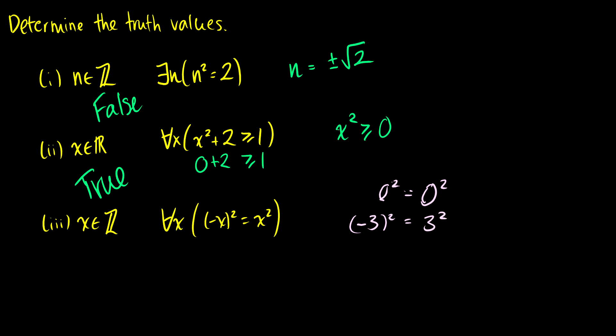Let's take a negative number — so negative negative 3, which is positive 3. So 3 squared equals negative 3 squared, and that is also true. Therefore it is true for any x. I'm just taking specific examples, but we can see if we extend this bigger or smaller it's going to be true for any integer. So this is also true.